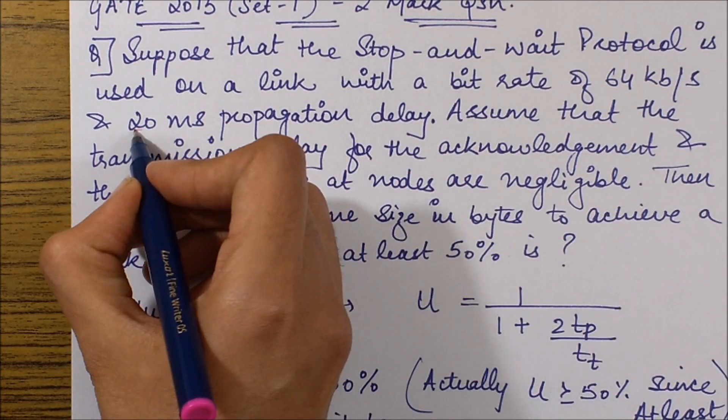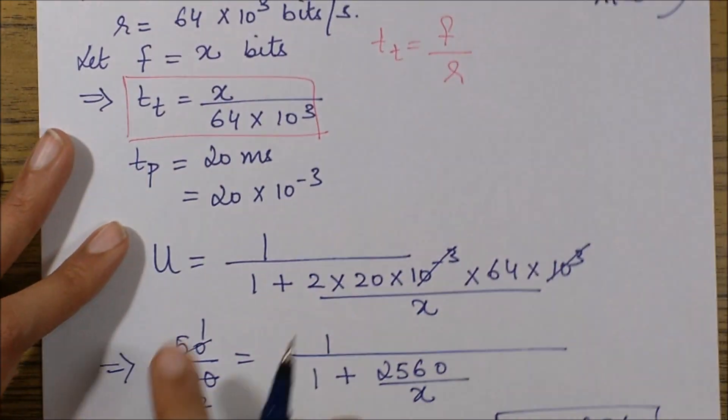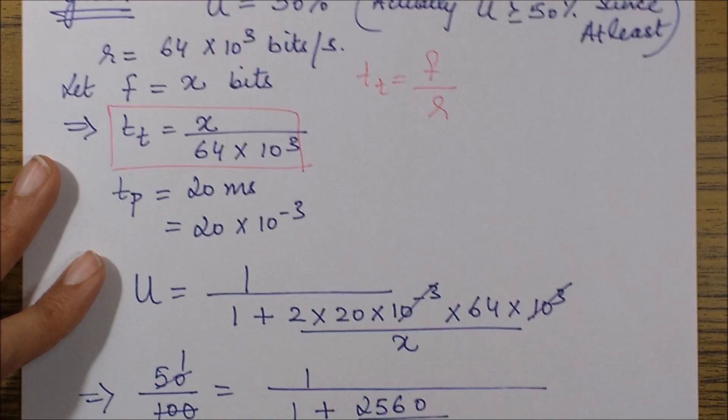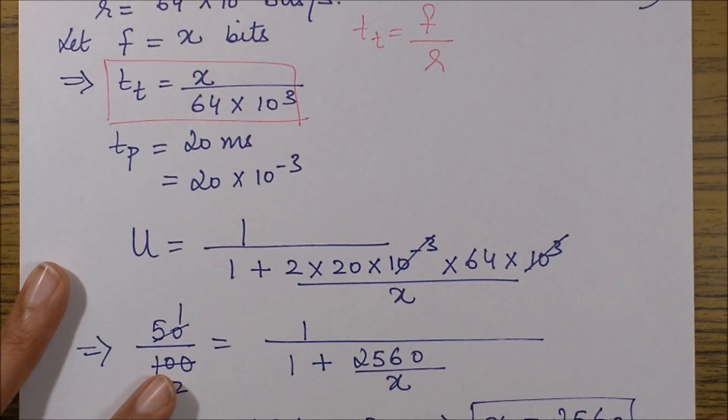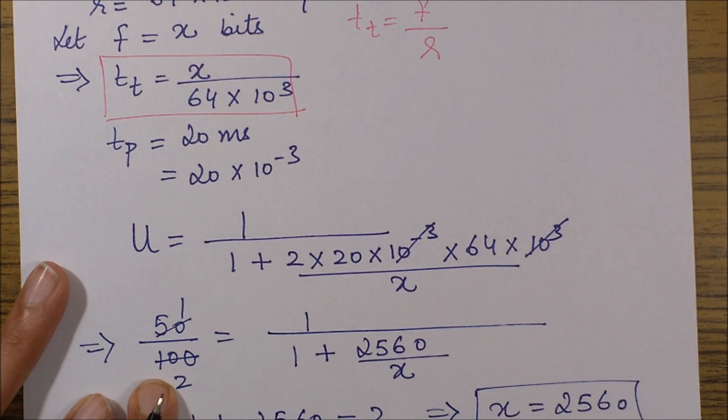tp propagation delay is given as 20 milliseconds, which is 20 times 10 to the power -3. Then I put these values in my formula, simplify it, and equate it to 50 percent.